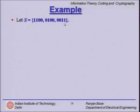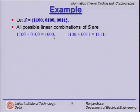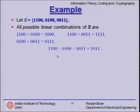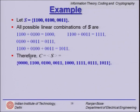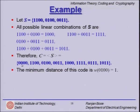Let S consist of three vectors. We write out all possible linear combinations: adding pairs and all three together, yielding four possible outcomes. The code C is defined as all these elements. This turns out to be a code with minimum distance equal to 1.